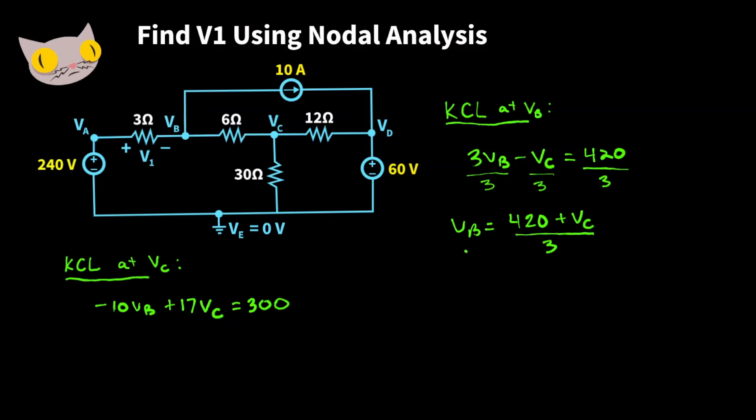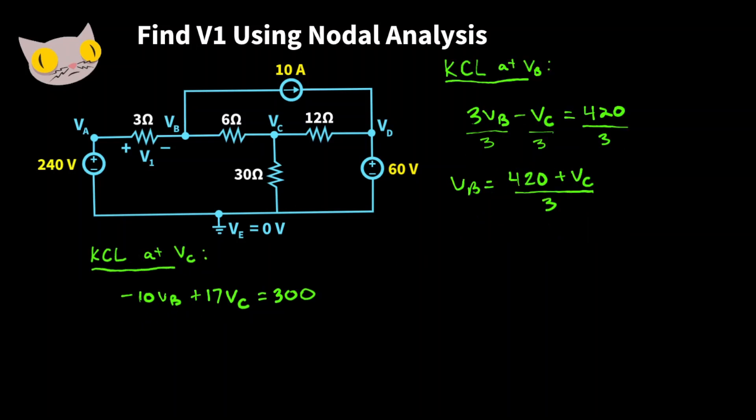Now we have a general idea of what VB is equal to. Let's put it into this equation. So working down here, we have negative 10VB, which is 420 plus VC over 3 plus 17VC equals 300. Now solving for VC, we're going to get about 124.4 volts.